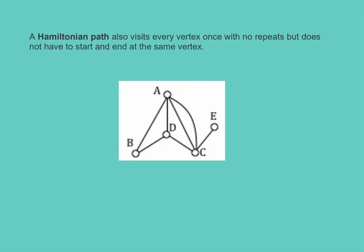For a Hamiltonian path, it must also visit every vertex once with no repeats, but it does not have to start and end at the same vertex. If I start at vertex E, I could go to C, then A, D, and B — that gets me to every vertex. Let's try another one starting at vertex B: go from B to A to D to C and to E. That would be another Hamiltonian path.